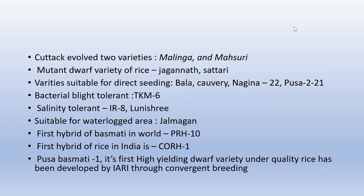Kutuk evolved two varieties named Malinja and Mysore. Mutant dwarf varieties of rice are Jagannath and Satari. Varieties suitable for direct seeding: Bala, Kaveri, Nagina 22, Pusa 221. Bacterial blight tolerant variety is TKM6. Soil salinity tolerant varieties are IR8 and Lunishree. Variety suitable for waterlogged area is Jalmagna. The first hybrid of basmati in the world is PRH10. First hybrid of rice in India is CORH1. Pusa Basmati 1 is the first high-yielding dwarf quality rice variety, developed through convergent breeding using IR8.